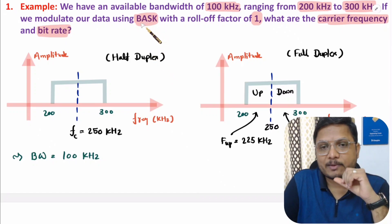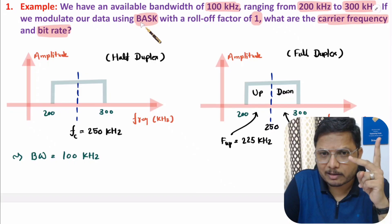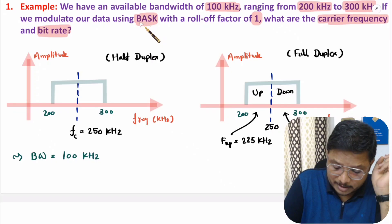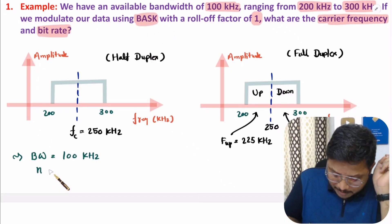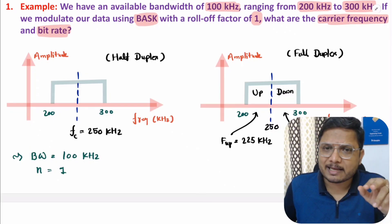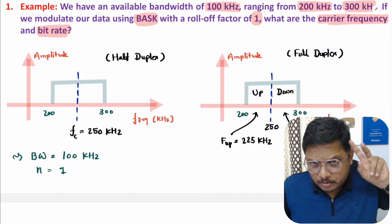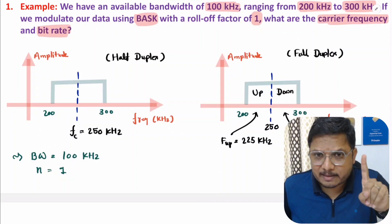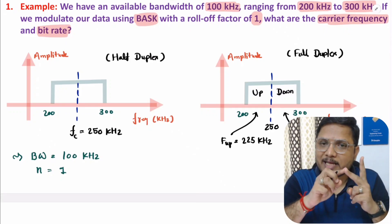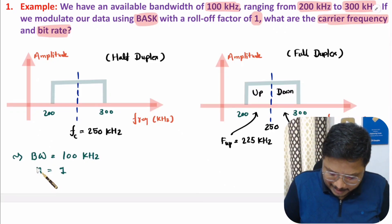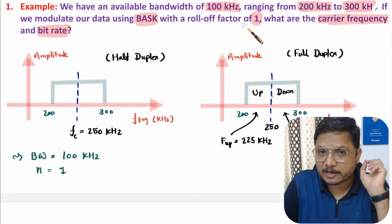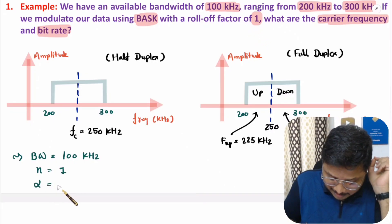We have binary ASK, which has only two symbols — one symbol for logic zero and one symbol for logic one. This means the number of bits per symbol is one, since binary has only two symbols and for one symbol you need only one bit. So n equals one. And here the roll-off factor alpha is given as one.